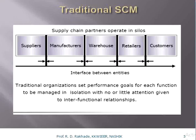Traditional supply chain management involves all factors such as supplier, manufacturer, warehouse, and retailer. Earlier, the business environment was highly localized; most raw materials were sourced locally and supply chain management was not complicated. Traditional organizations set performance goals for each function to be managed in isolation, with little or no attention given to inter-functional relations. There was only a simple linear connection: supplier to manufacturer, supplier to warehouse, or retailer to customer, with no direct connection between all parties.